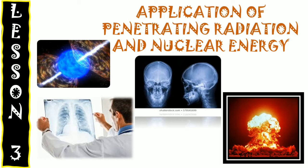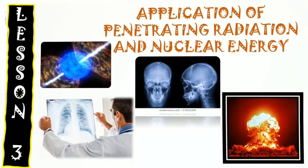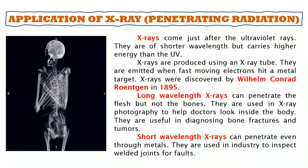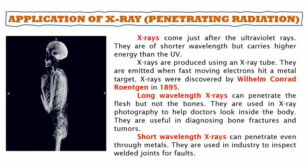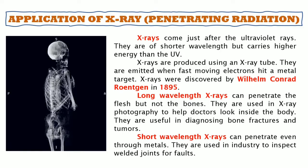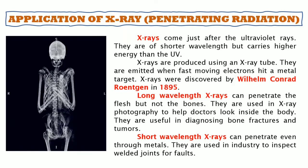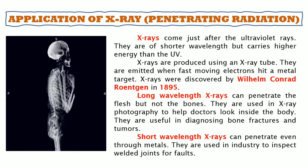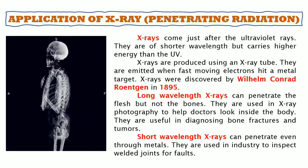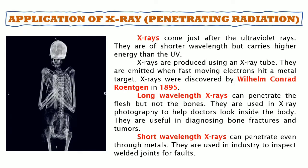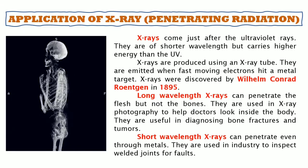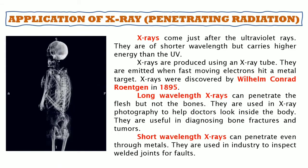We are now in lesson 3, which covers the application of penetrating radiation and nuclear energy. X-rays come just after ultraviolet rays — they have shorter wavelengths but carry higher energy. X-rays are produced using an X-ray tube and are emitted when fast-moving electrons hit a metal target. They were discovered by Wilhelm Conrad Roentgen in 1895. Long wavelength X-rays penetrate flesh but not bones, making them useful in X-ray photography to diagnose bone fractures and tumors. Short wavelength X-rays penetrate even metals and are used in industry to inspect welded joints for faults.